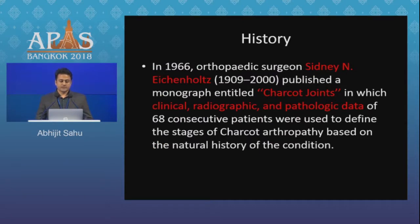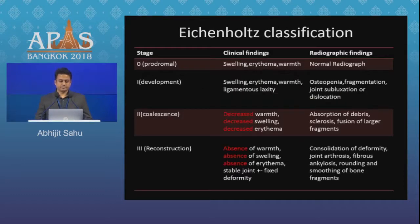Ekenholz in 1966 published a monograph entitled 'Charcot Joints' in which clinical, radiographic and pathologic data of 68 consecutive patients were used to define the stages of Charcot Arthropathy based on the natural history of the condition. The various stages given were: the prodromal stage, in which swelling, erythema and warmth is present; however, there are no radiologic findings.